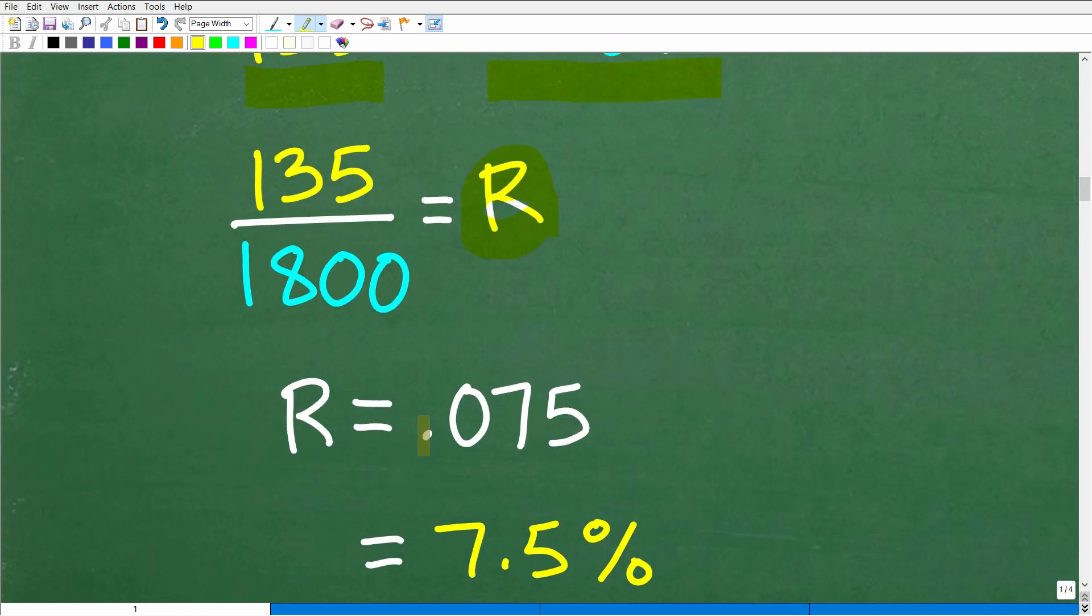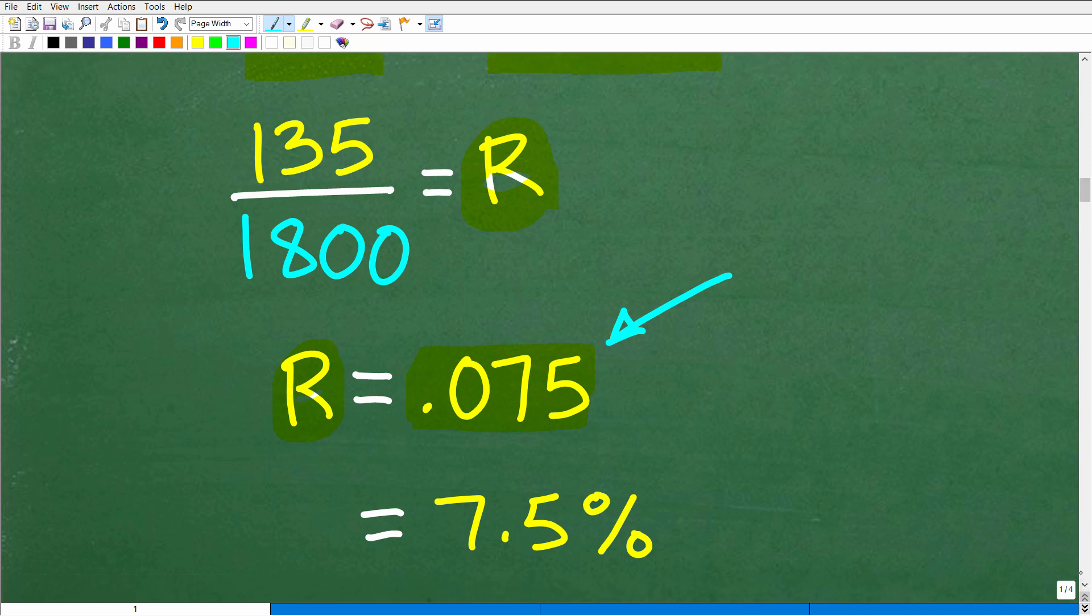So when we do that math, we get R is equal to 0.075. Now, if you answered with this number right here, this value, well, you were pretty close. But here's the deal. Financial institutions are going to express your rate of return in terms of percent. So we have to go from a decimal to a percent.